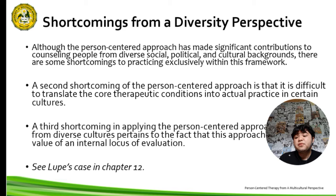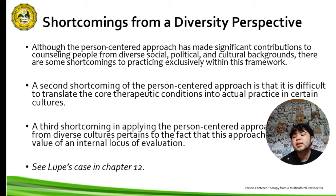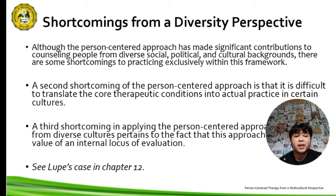A second shortcoming is that it is difficult to translate the core therapeutic conditions into actual practice in certain cultures. Communication of these core conditions must be consistent with the client's cultural framework. For example, clients accustomed to indirect communication may not be comfortable with the direct expression of empathy or self-disclosure on the therapist's part. For some clients, the most appropriate way to express empathy is for the therapist to demonstrate it indirectly — through respecting their need for distance or through task-focused interventions, according to Bohart and Winberg in 1997.